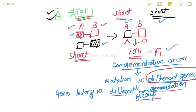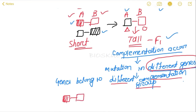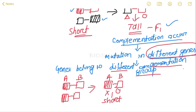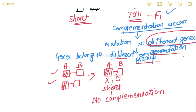Now let's take another example where the mutation is in the same gene — both gene A copies are mutated. The offspring will get one A gene and one B gene, but gene A is mutated so it cannot produce the triangular protein. Gene B will produce the circular protein, but for a tall plant we need both proteins. Since gene A is mutated, it will result in a short plant. From this we conclude: no complementation occurs.